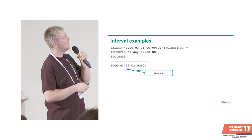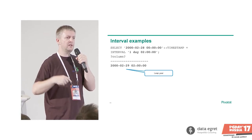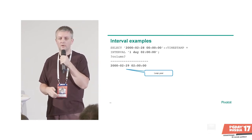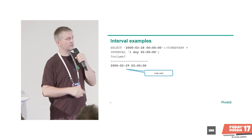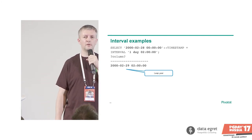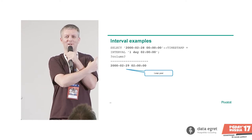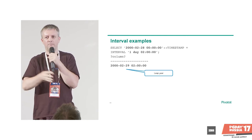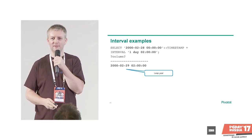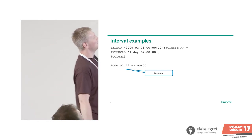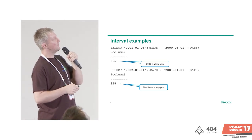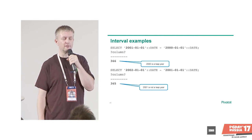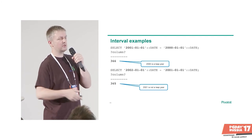More examples: February 28th plus an interval of one day — Postgres returns February 29th in the year 2000, which is a leap year. The rule: divisible by 4, but not by 100, unless also by 400 — so 2000 is a leap year. And 2001-01-01 minus 2000-01-01 gives 366 days, while 2002-01-01 minus 2001-01-01 gives 365 days.